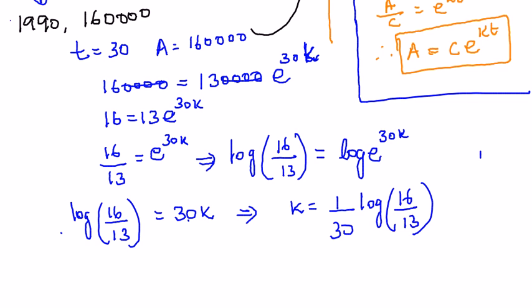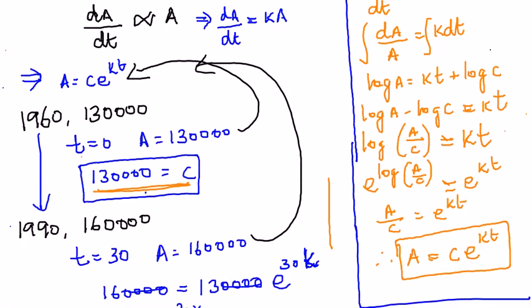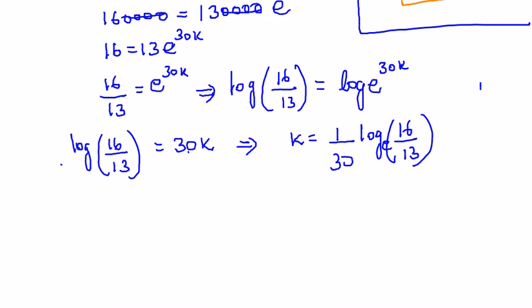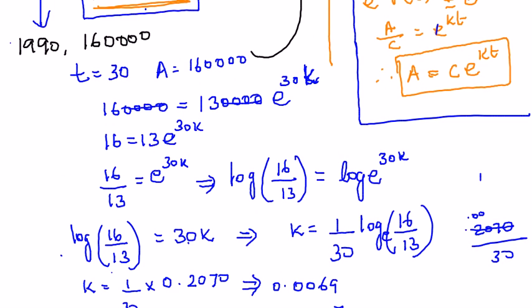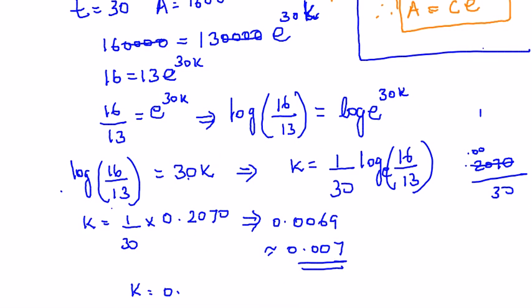They have given us the value of log of 16 by 13 to the base e, the value of that is 0.2070 in the sum. Let's substitute it over here. Therefore we get k is equal to 1 by 30 into 0.2070. 0.2070 divided by 30 is going to give us 0.0069, or you approximate it to 0.007. So I have got my value of k to be equal to 0.007.